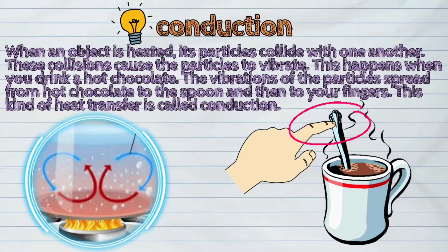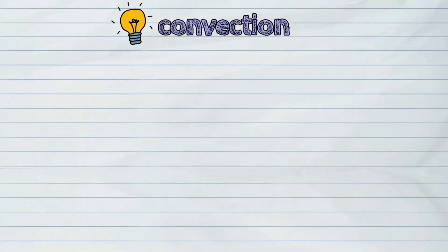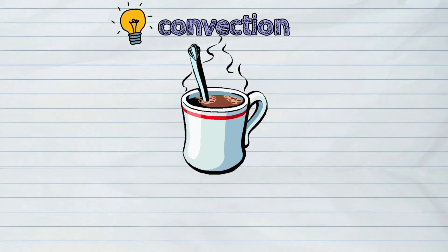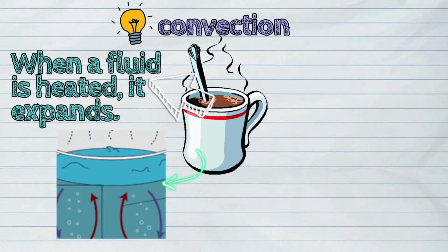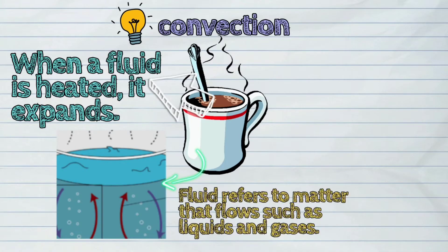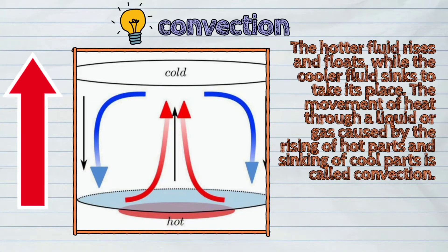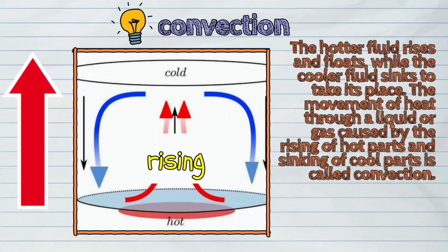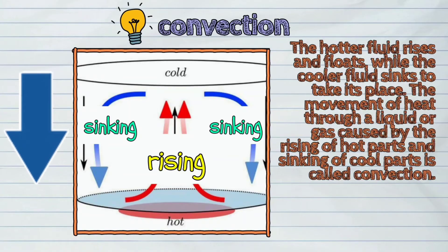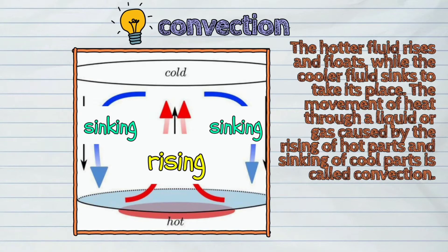The second way of heat transfer is convection. What happens to the hot chocolate drink in your mug? When fluid is heated, it expands. Fluid refers to matter that flows, such as liquids and gases. The hotter fluid rises and floats, while the cooler fluid sinks to take its place. The movement of heat through a liquid or gas caused by the rising of hot parts and sinking of cool parts is called convection.